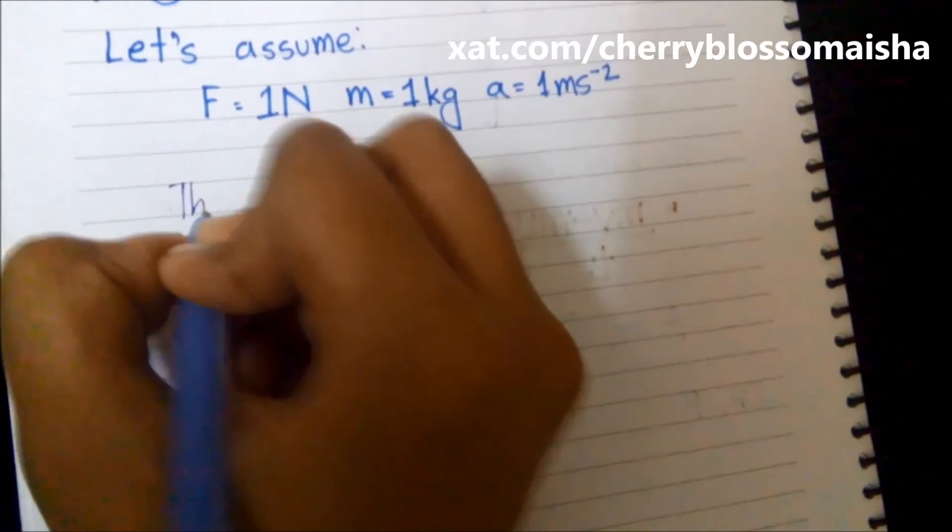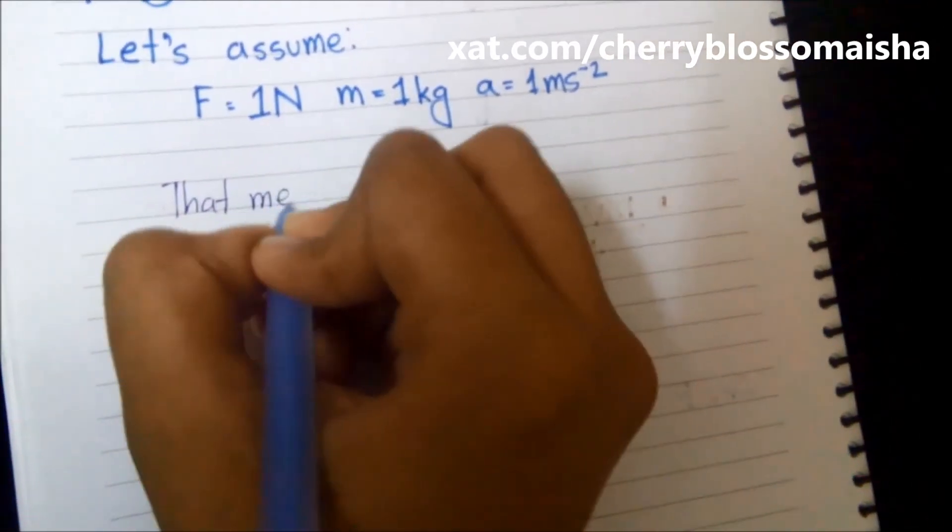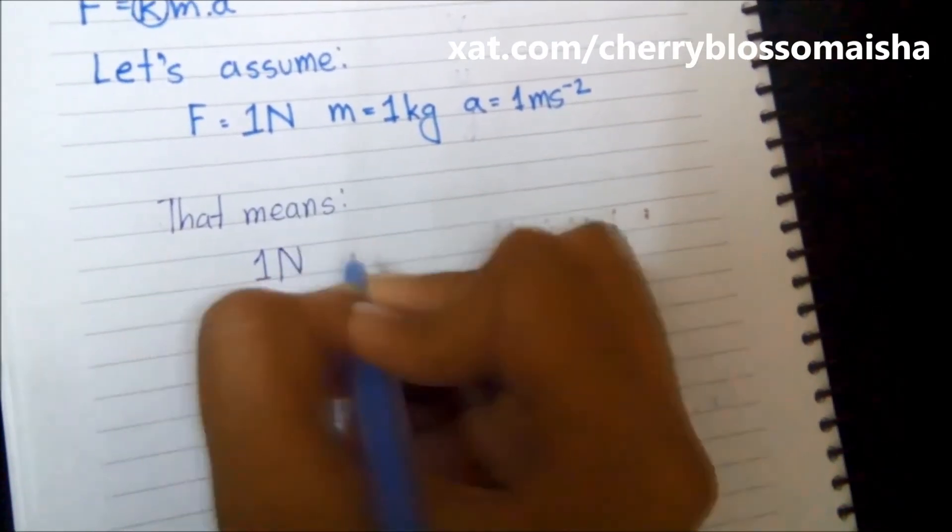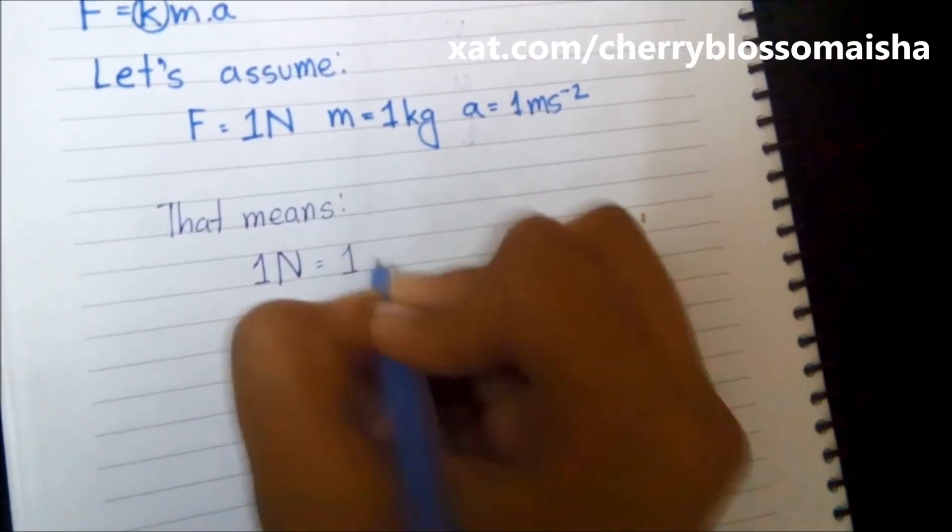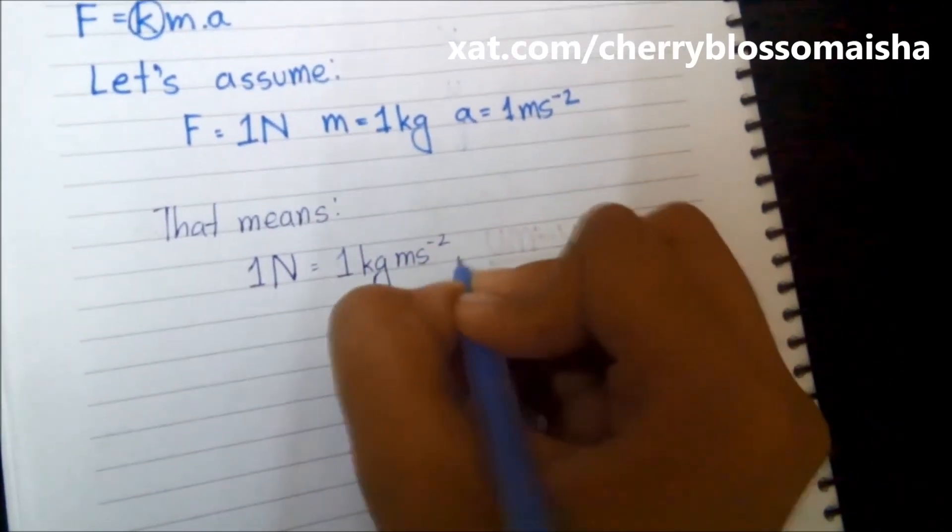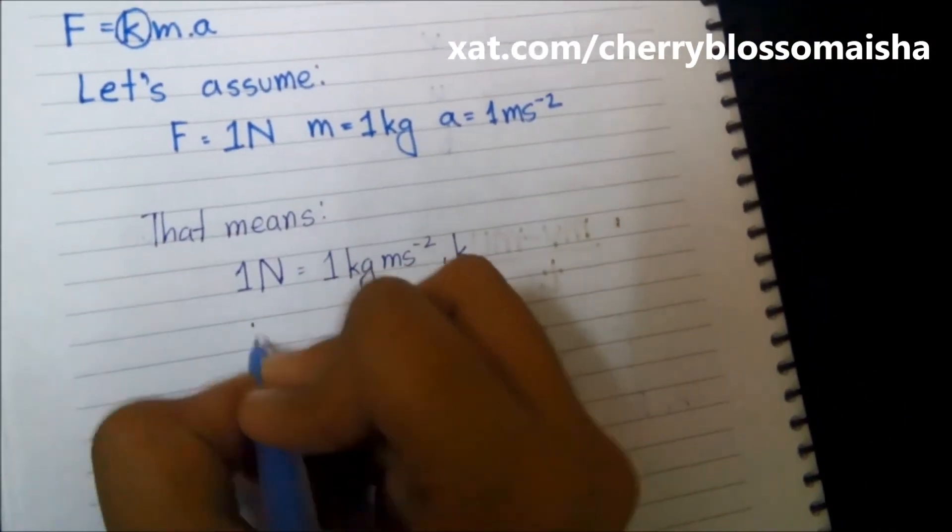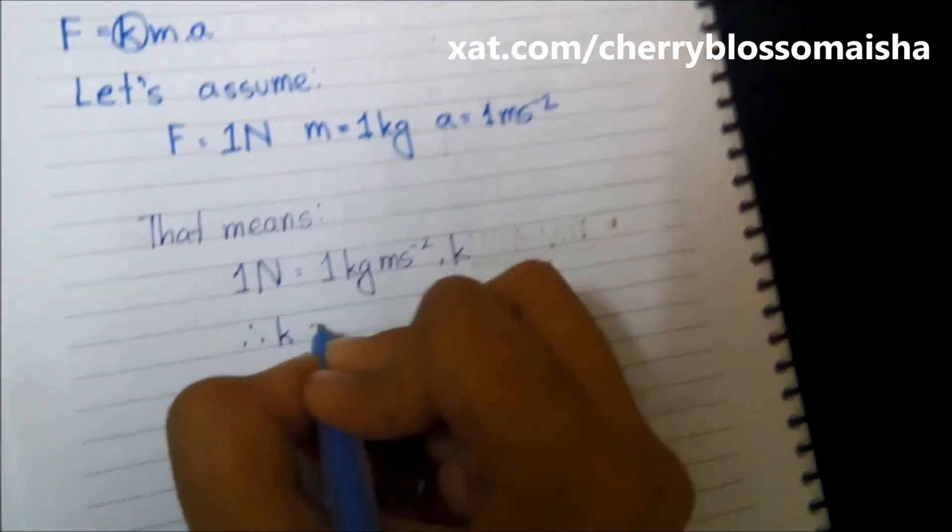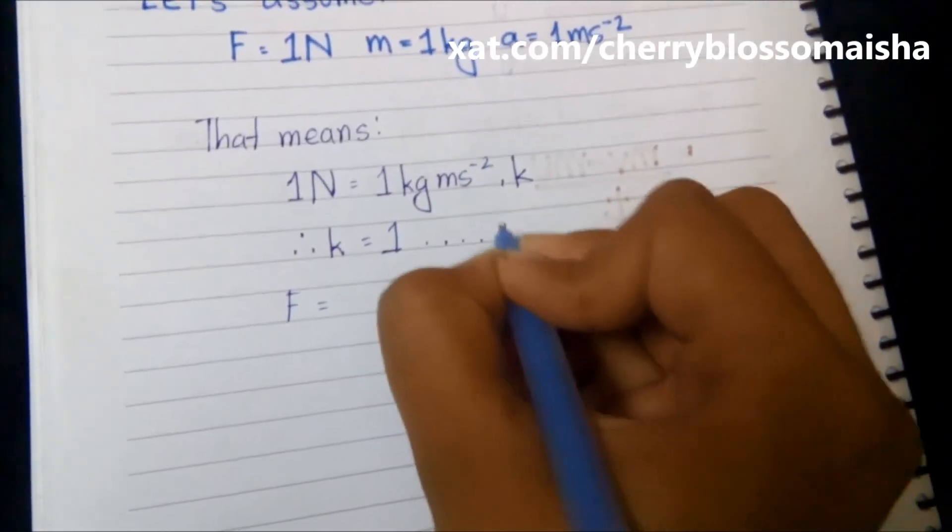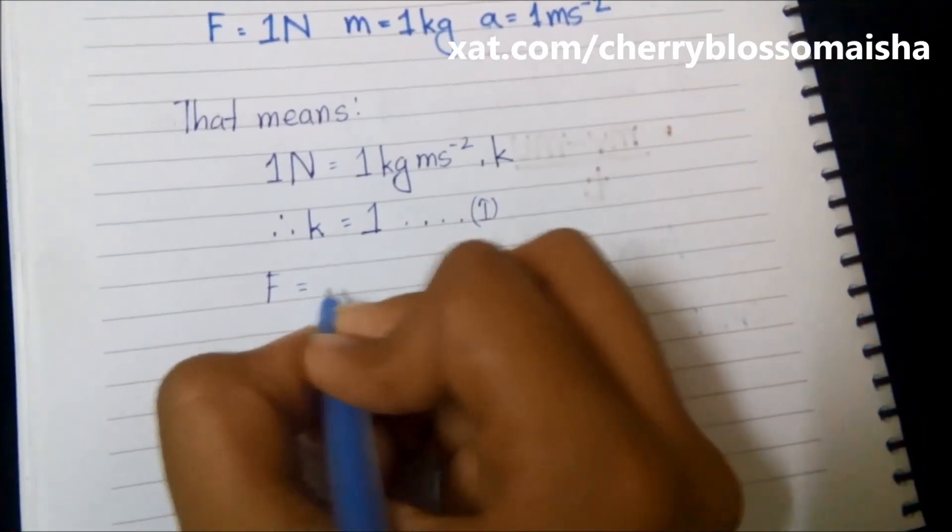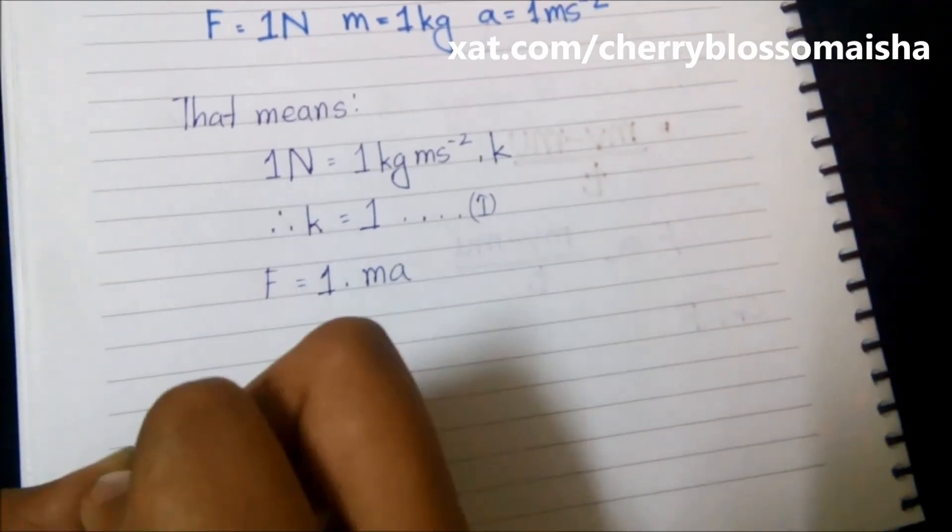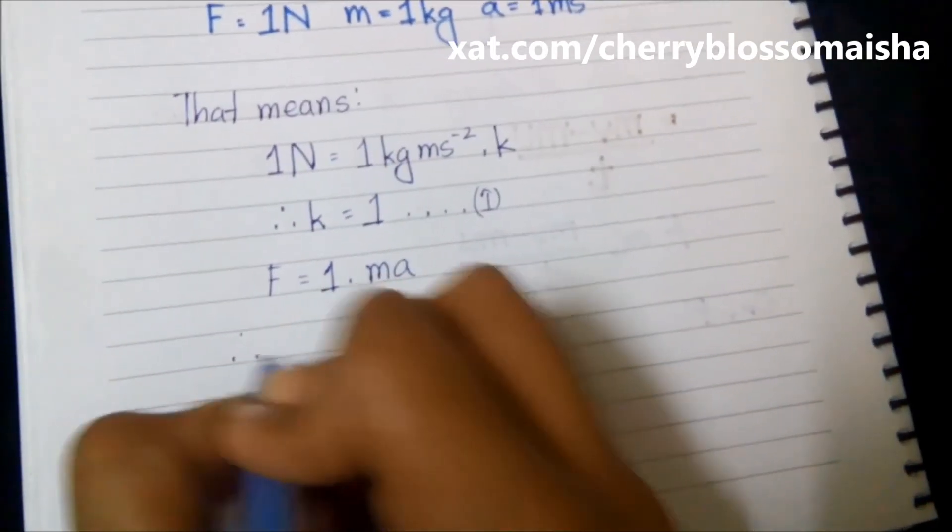So that means 1 Newton is equal to 1 kg meter per second square into K. That means K is equal to 1. And if it's equation number 1, then we can say by equation number 1 we get F is equal to 1 into M a, that means F is equal to M a.